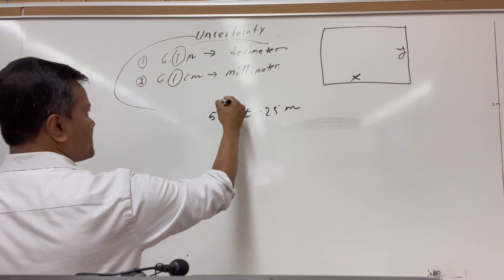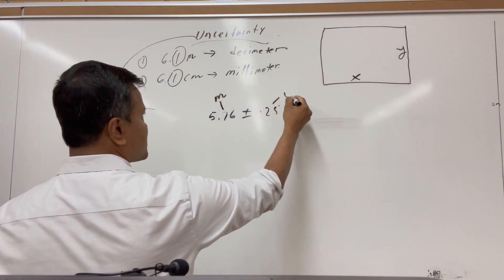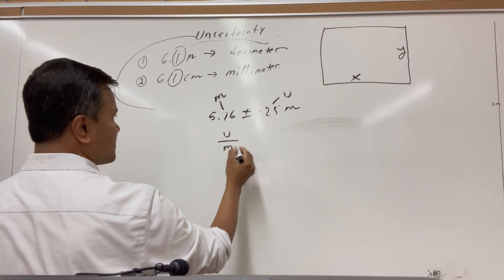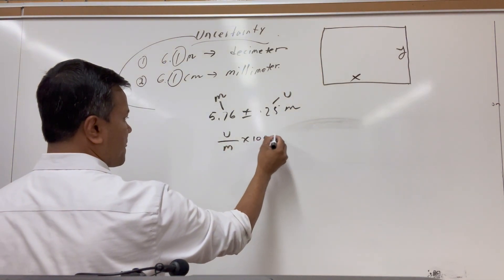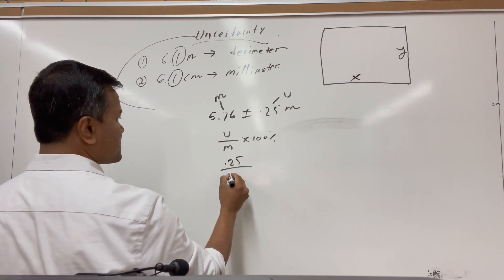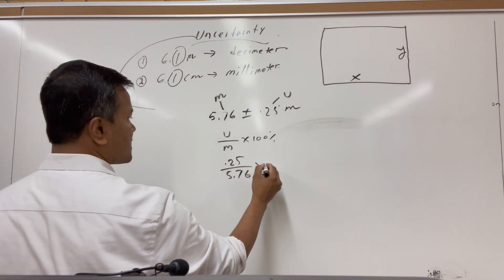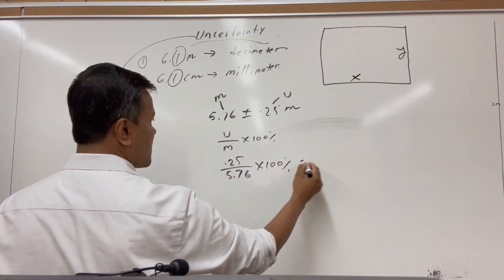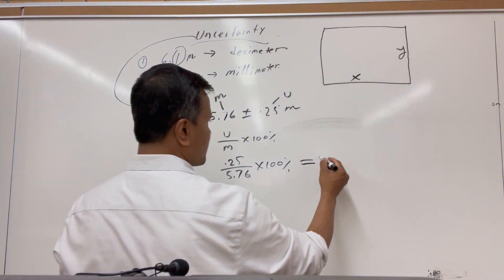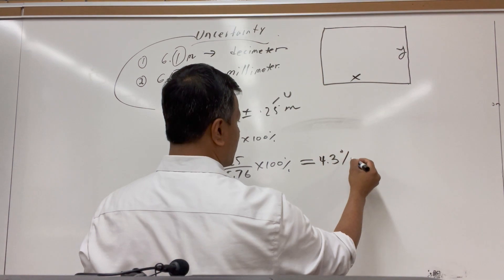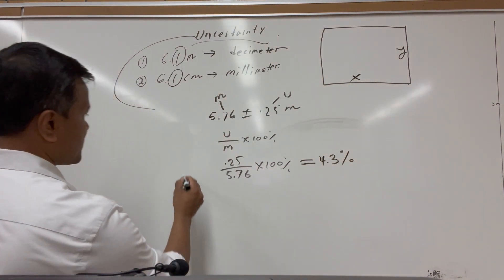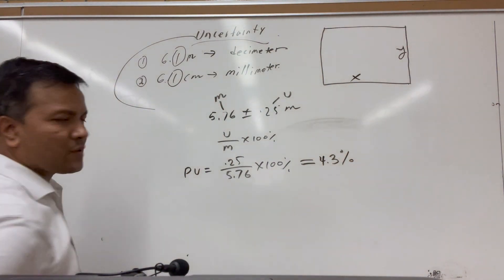Here is another example. The uncertainty is 0.25 and the measurement is 5.76. So 0.25 divided by 5.76 times 100% gives 4.3%. The percent uncertainty is 4.3%.